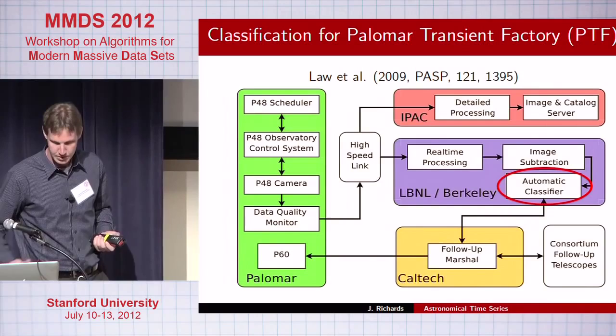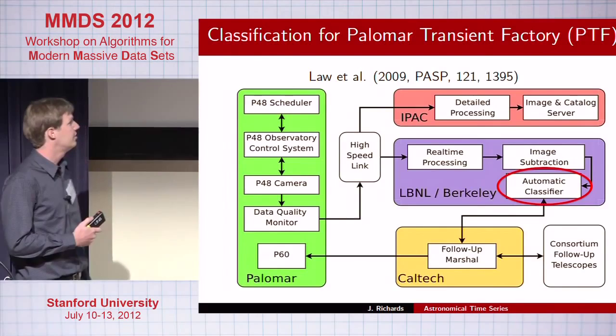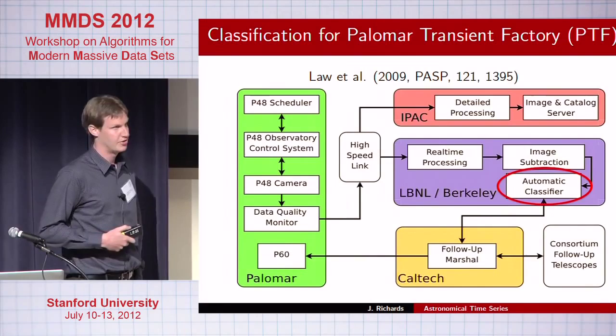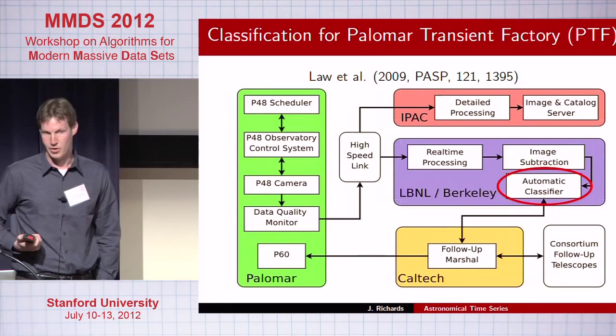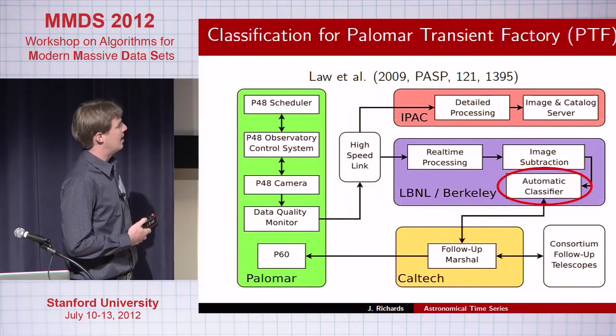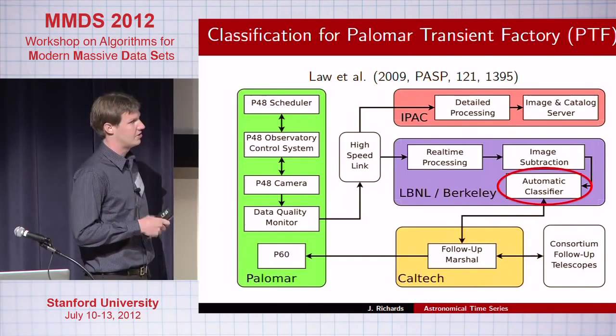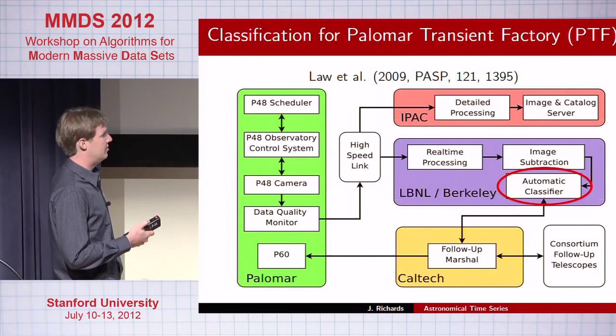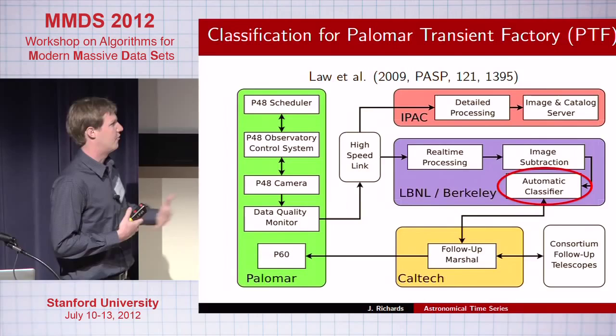I'm also a member of the Palomar Transient Factory collaboration — a project out of San Diego at Palomar Mountain. Through two-plus years of operation, we've observed and spectroscopically confirmed almost 1,500 different supernovae, an order of magnitude more than previously known. The basic data flow starts with a 48-inch survey telescope continually monitoring the sky and producing images, which are then sent to LBNL where they're subtracted against a deep reference image — essentially a median average image from historical data.